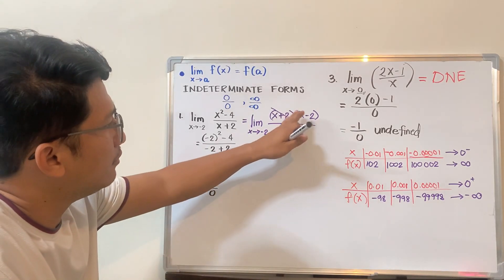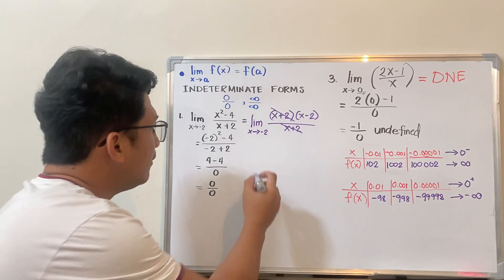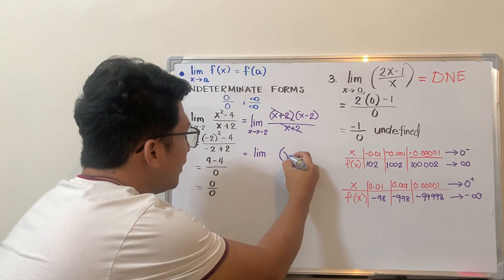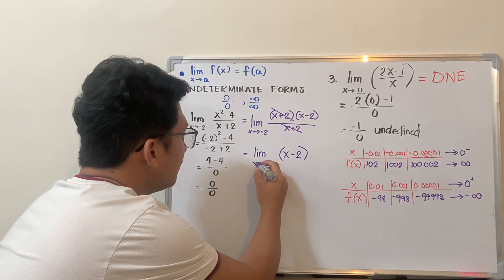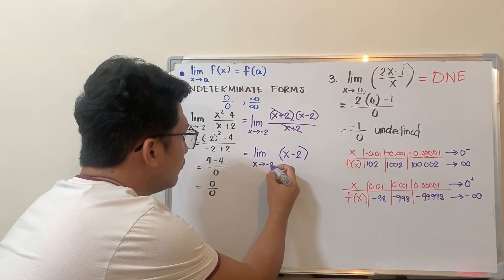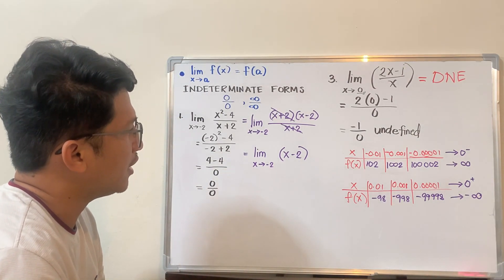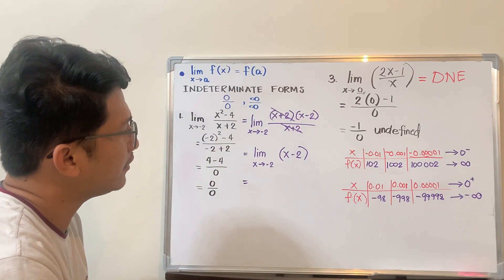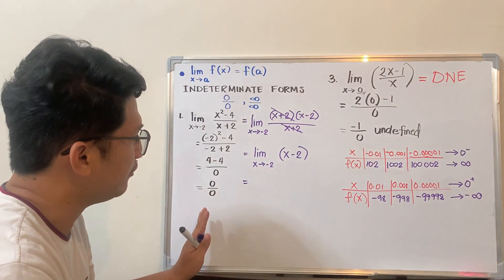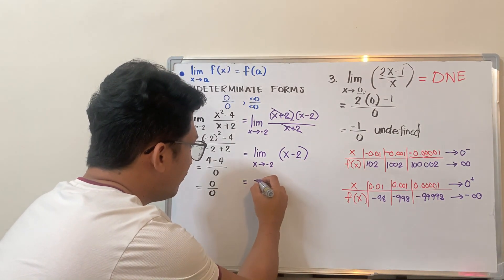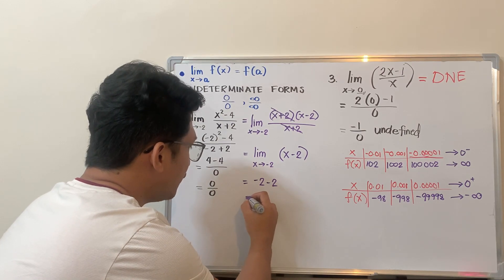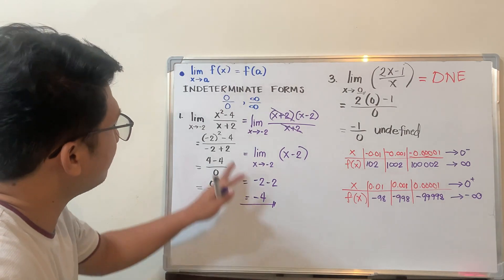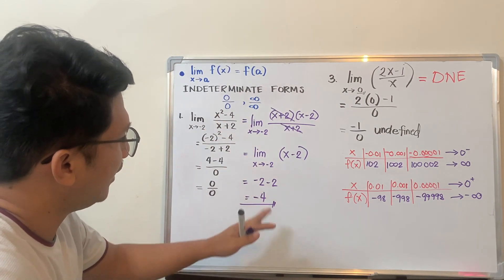After cancellation, we come up with the limit of (x - 2) as x approaches negative 2. Now try to substitute: negative 2 minus 2 is equal to negative 4. Therefore, the limit of the function is negative 4.